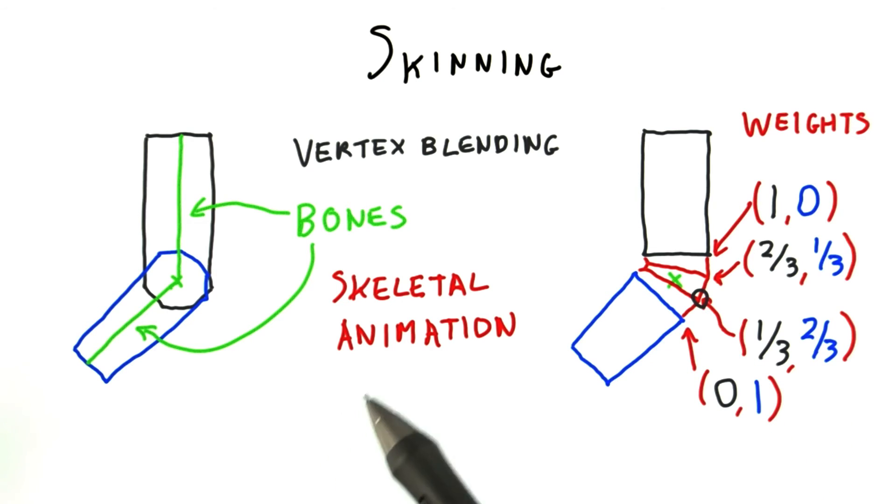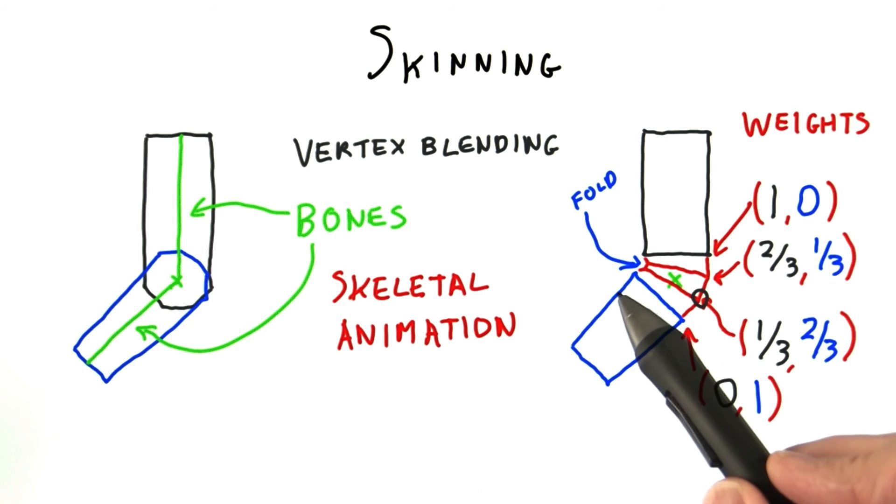The basic algorithm works fairly well but can have problems. For example, in the inner part of the elbow, the points may bend inward in an unconvincing way.